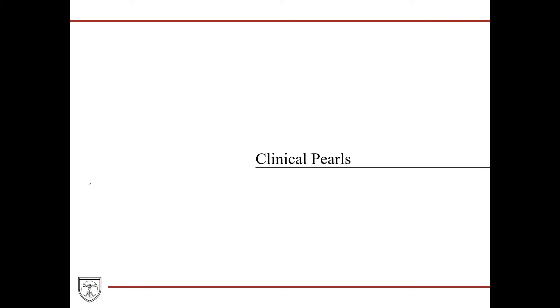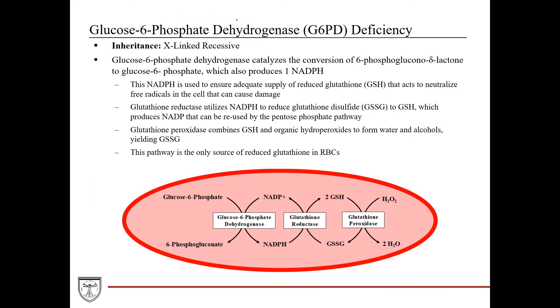Now we'll cover a clinical pearl: glucose 6-phosphate dehydrogenase, or G6PD, deficiency. This is a very high-yield disease because it ties together concepts from biochemistry, hematology, pathology, and genetics, since the inheritance is X-linked recessive. It's very common to see on biochemistry and pathology exams.